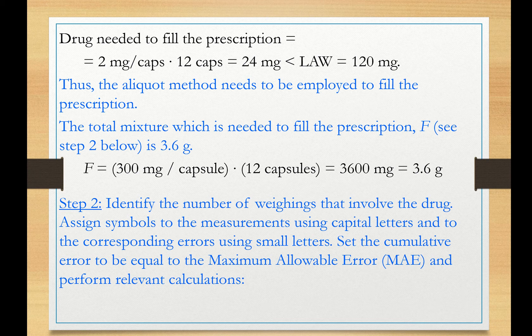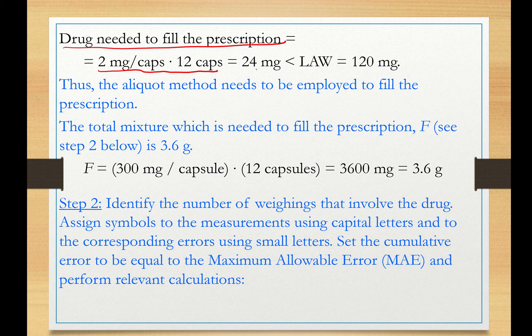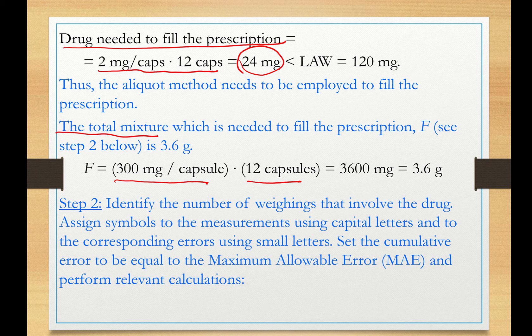The drug needed to fill the prescription is 2 milligrams per capsule times 12 capsules, 24 milligrams. That's less than the least allowable weight. Therefore you need to use the aliquot method. If you attempt to weigh directly 24 milligrams on a balance, you're going to exceed the maximum allowable error. Now my total mixture is 300 milligrams per capsule times 12 capsules. So that's 3600 milligrams.